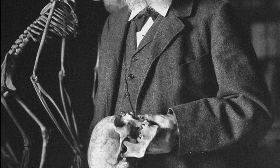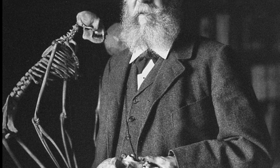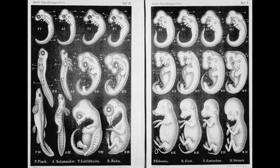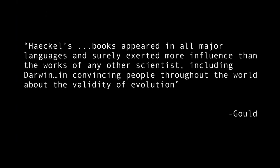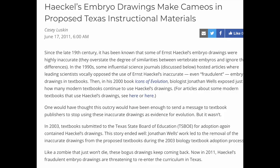Shortly after the publication of On the Origin of Species, Professor Ernst Haeckel, one of the foremost biologists of his time, drew and published a set of embryos which showed how similar human embryos are to various animal embryos. The drawings, according to Haeckel, were quote, completely exact. The work was received by academia and media with great fanfare. The scientific consensus was in — the theory of evolution had been proven. Later, however, it was discovered that the drawings were deliberately faked by Haeckel. He had removed and added parts to the various embryos to make them appear similar. Over a hundred years later, prominent evolutionist Stephen Gould stated that Haeckel's books appeared in all major languages and surely exerted more influence than the works of any other scientist, including Darwin, in convincing people throughout the world about the validity of evolution.